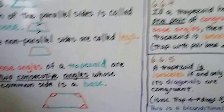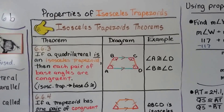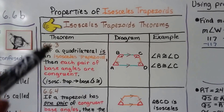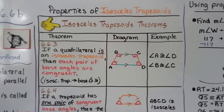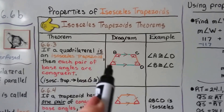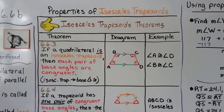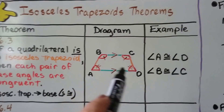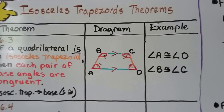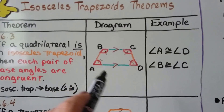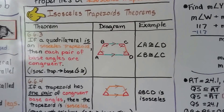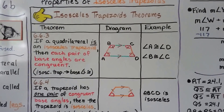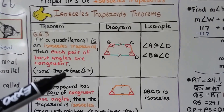Just like an isosceles triangle has two congruent legs. So the properties of isosceles trapezoids — we're starting with theorem three since 6.6a covered the first two. Theorem three: if a quadrilateral is an isosceles trapezoid, then each pair of base angles are congruent. The two top angles are congruent to each other, and the two bottom angles are congruent to each other, shown with tick marks. So angle A is congruent to angle D, and angle B is congruent to angle C.